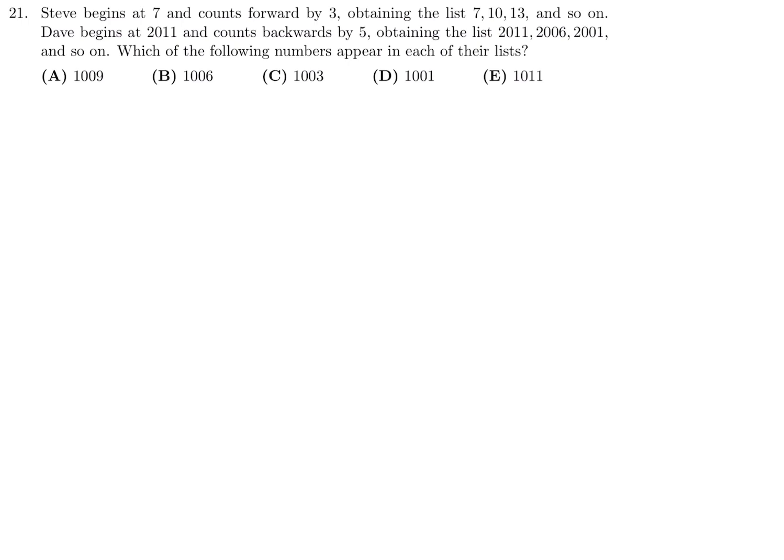Steve begins at 7 and counts forward by 3, obtaining the list 7, 10, 13, and so on. Dave begins at 2011 and counts backwards by 5, obtaining the list 2011, 2006, 2001, and so on. Which of the following numbers appears in each of their lists?